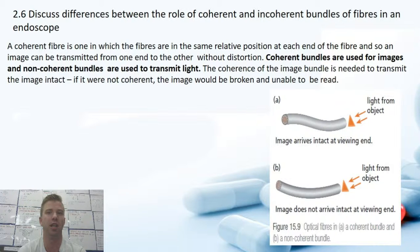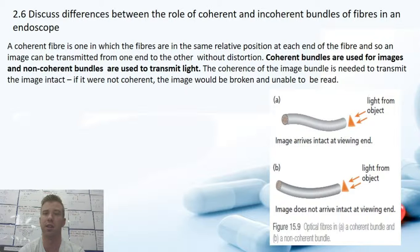So that's basically the difference: coherent bundles are used for images and non-coherent bundles are used to transmit light — as simple as that — with a diagram on the bottom right to reaffirm that.